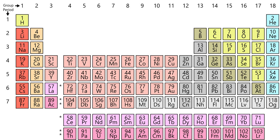Completing the fourth period are the post-transition metals zinc and gallium, the metalloids germanium and arsenic, and the nonmetals selenium, bromine, and krypton.